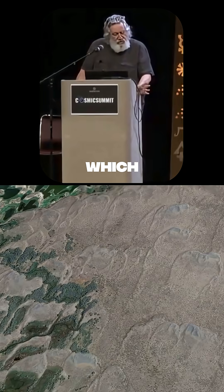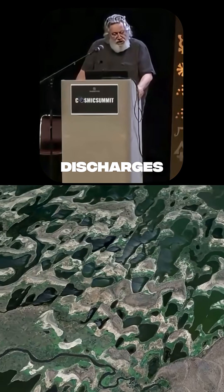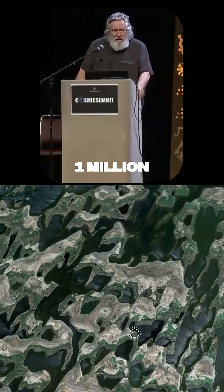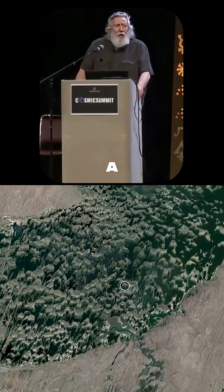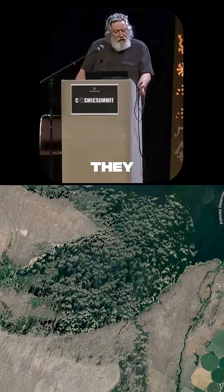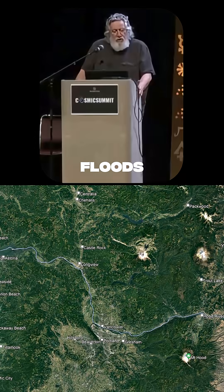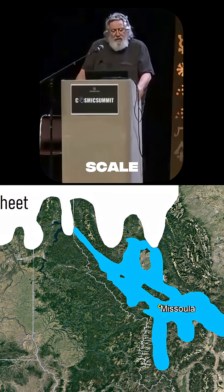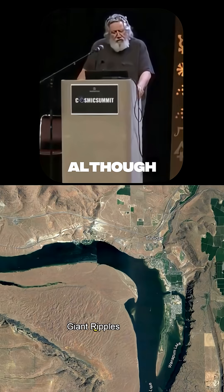Megafloods are terrestrial water flows with discharges exceeding 1 million cubic feet per second. They are the largest known freshwater floods, with flows comparable in scale — though of shorter duration — to ocean currents.